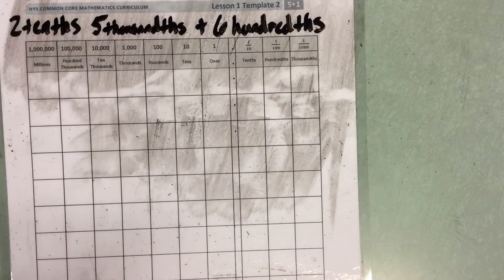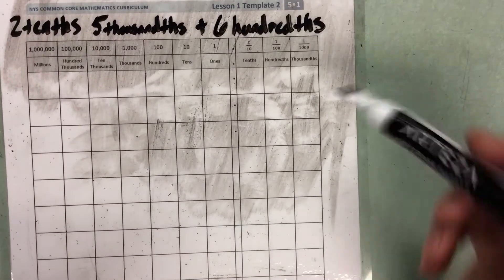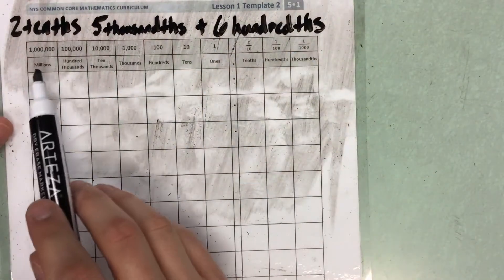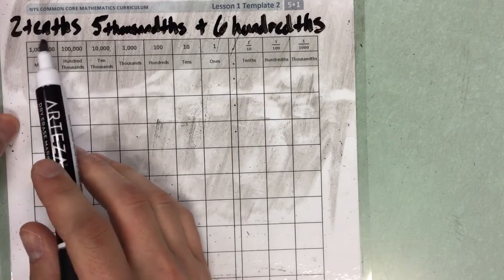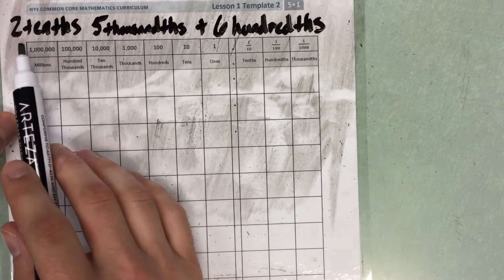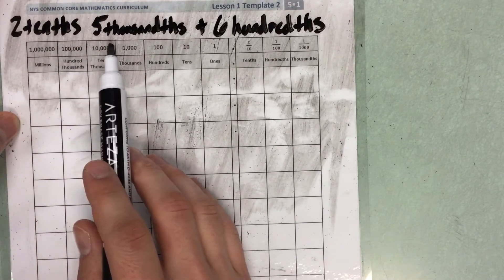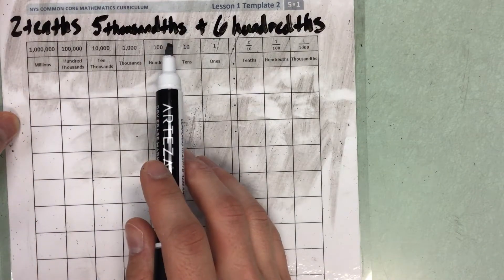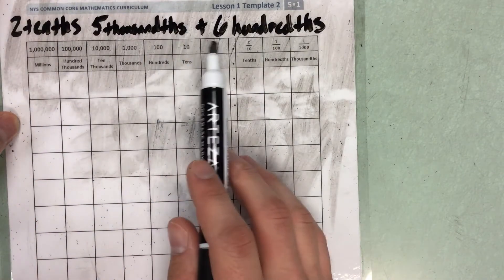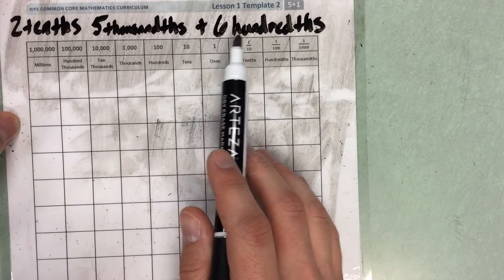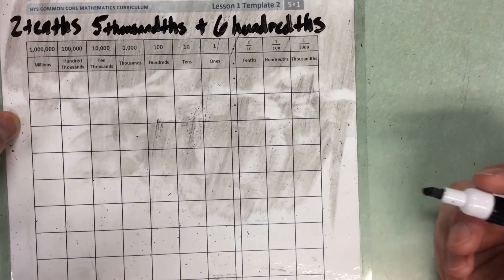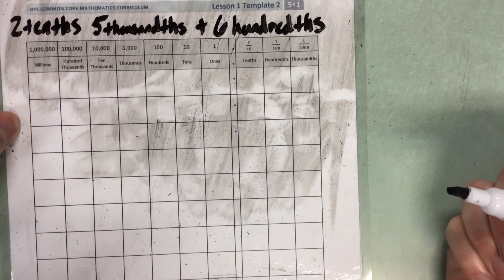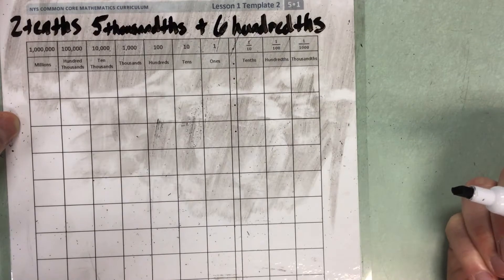For our next example, I want you to pause the video and see if you can put in the place value chart, using place value disks: 2 tenths, 5 thousandths, plus 6 hundredths. Go ahead and pause the video and see if you can put those two numbers in your place value chart to add them.